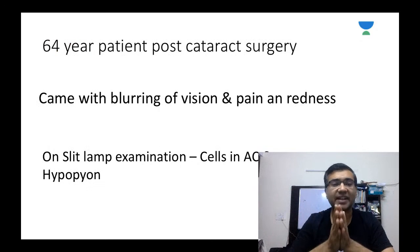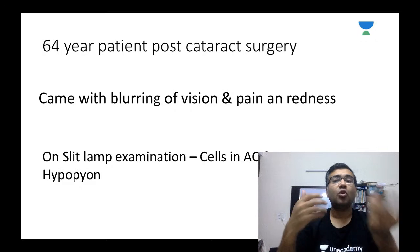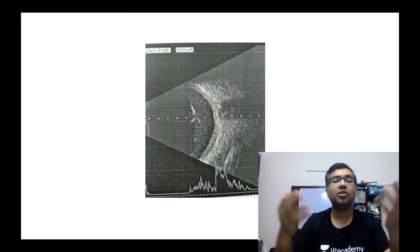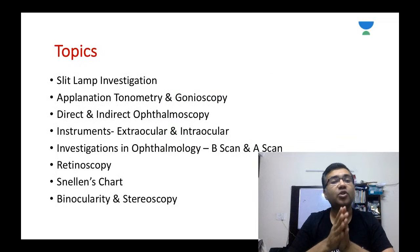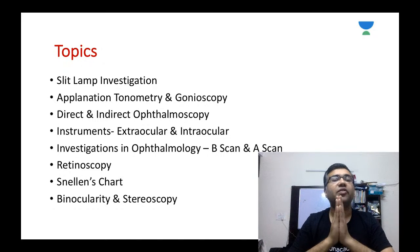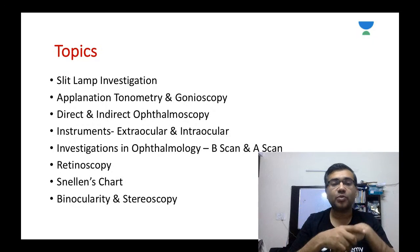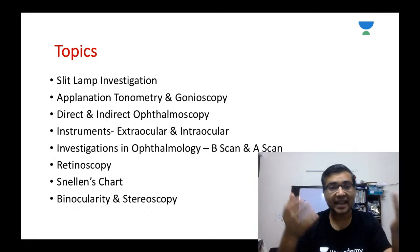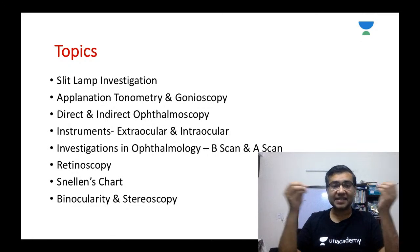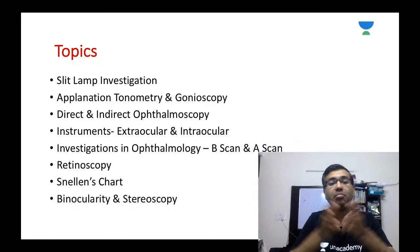We will also have lots of viva questions. For example: a 64-year-old patient post cataract surgery presents with blurring of vision, pain, and redness. On slit lamp examination there are cells in the anterior chamber and hypopyon — what is your diagnosis? You would do an ultrasound and based on the findings confirm that this patient has endophthalmitis. We will also talk about practical instruments: slit lamp, applanation tonometry, gonioscopy, direct and indirect ophthalmoscopy, extraocular and intraocular instruments, B-scan (USG B-scan), A-scan, and how to do retinoscopy.